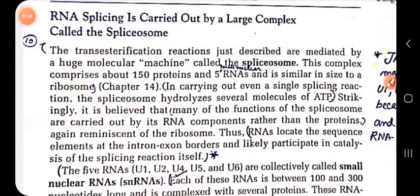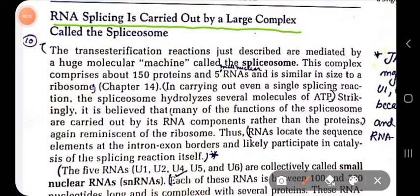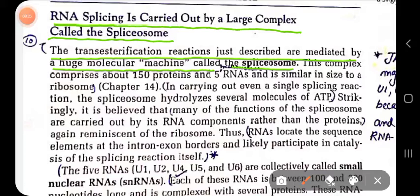RNA splicing is carried out by a large complex called the spliceosome. The transesterification reactions are mediated by this huge molecular machine. The spliceosome is a complex comprising about 150 different types of proteins involved in the splicing process.